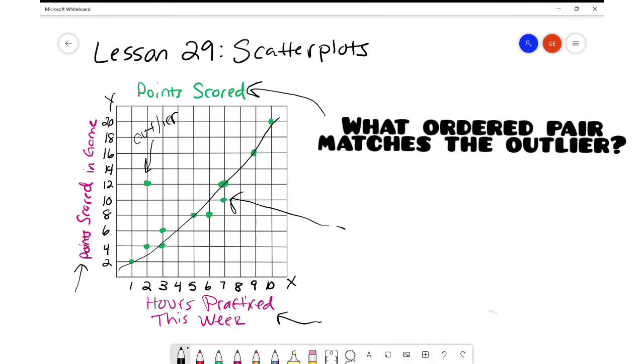My next question for you is, what ordered pair matches the outlier? Why don't you pause the video and write it down? All right, we have 2-12. Great job. Two hours practiced, 12 points scored in the game.